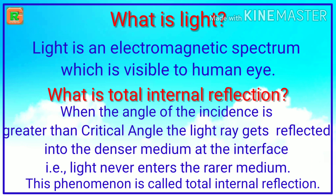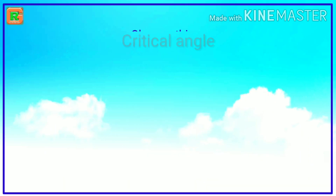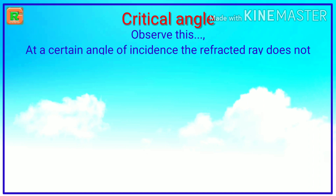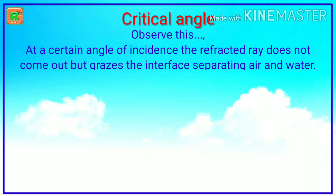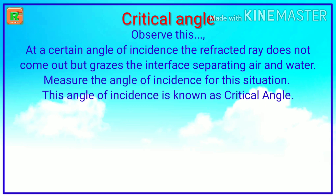Let us understand. But before going to understand this definition, we have to know about critical angle. At a certain angle of incidence, the refracted ray does not come out but grazes the interface separating air and water. This angle of incidence is known as the critical angle. This is possible when a light ray travels from a denser to a rarer medium.